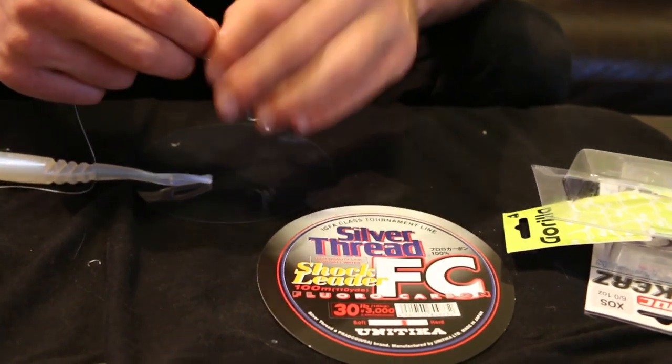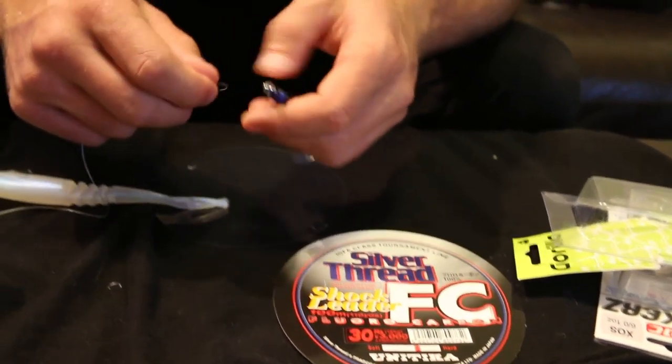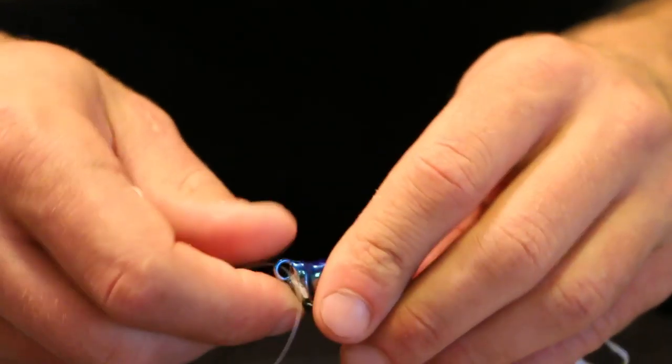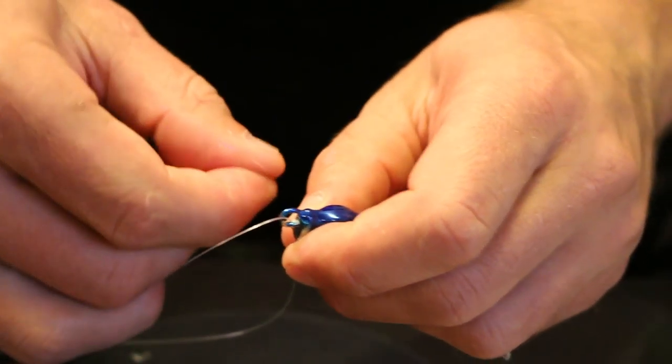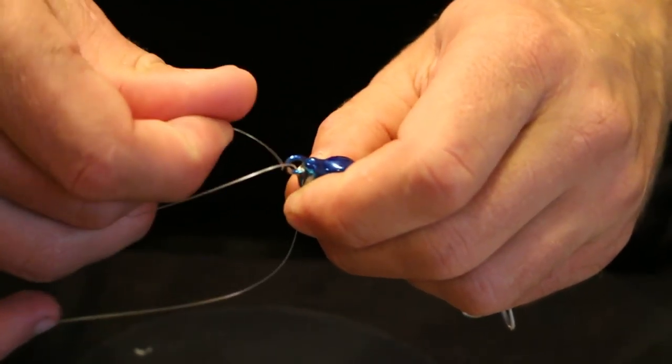I'm using the Silver Thread Fluoro from Unitica. So I go through once, and then I go through again. That's where I get my extra strength from.